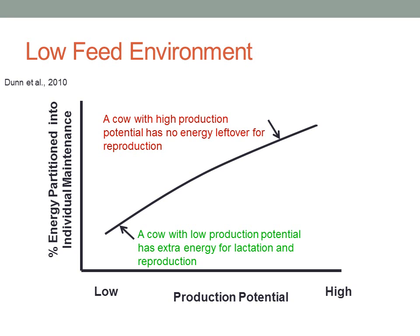Looking at the percentage of energy partitioned into individual maintenance in a low feed input environment: a cow with low production potential, when feed is limited, has additional resources to put into other things such as fertility. But on the flip side, a cow with a lot of lactation potential really doesn't have any leftover to maintain her body condition and to be fertile.